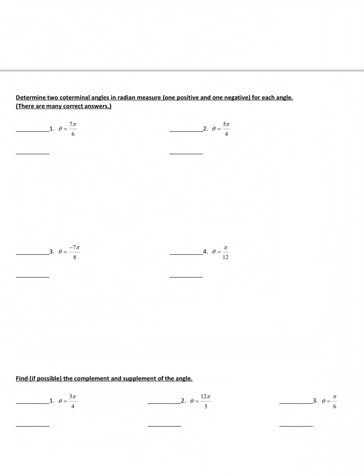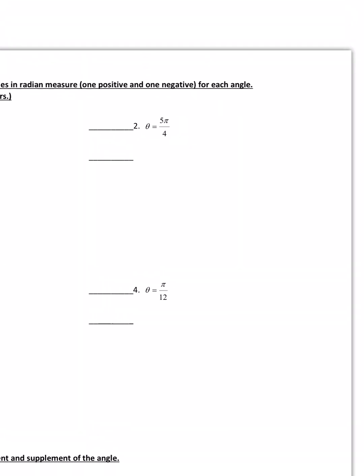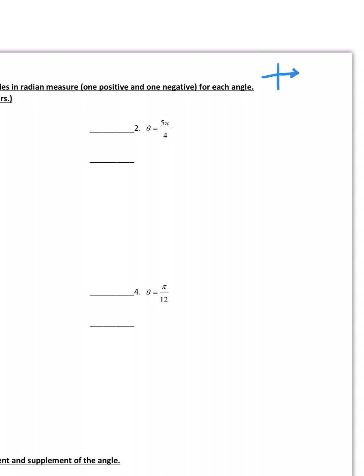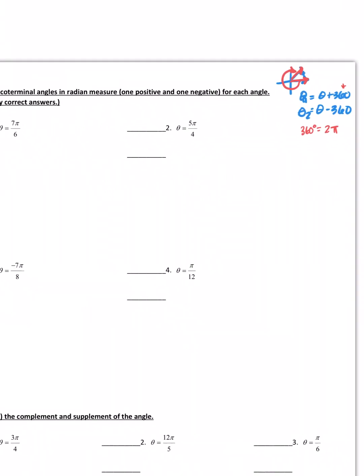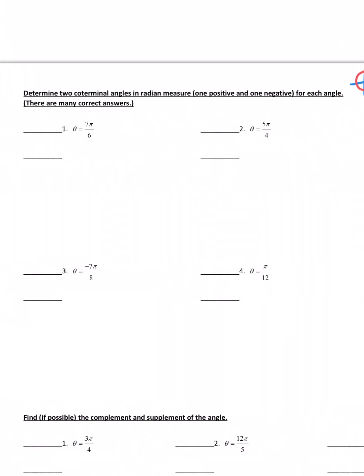On the back, we are revisiting what we talked about when we did coterminal angles. This time we're just doing it in radian measure. Let me remind you, coterminals are angles that have the same initial and terminal end, but they may just have a different number of revolutions. If you remember what we did in degrees, to get that first coterminal, we took the theta they gave us and we added 360 to get a positive, and then to get a negative we subtracted 360.